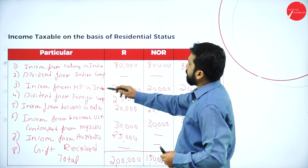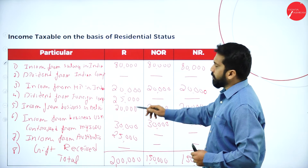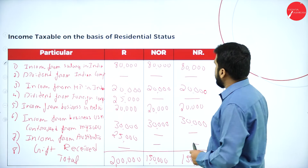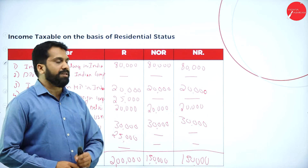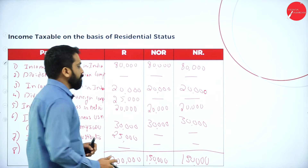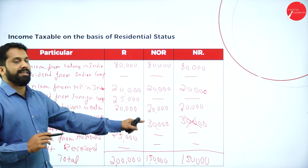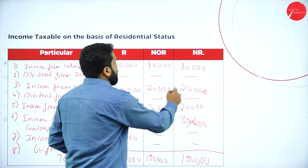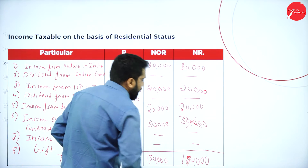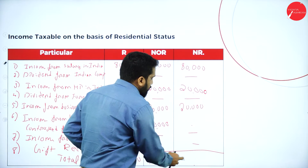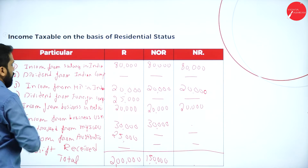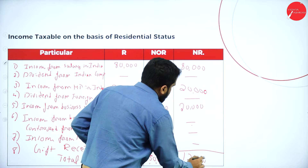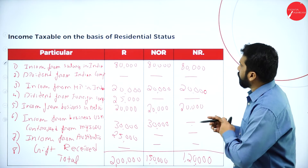Income from business USA controlled from Mysore — the 30,000 will not come for the last person (non-resident) because anything controlled in India is taxable for only two persons. So remove that entry. For the non-resident (person three): 80,000 + 20,000 + 20,000 = 1,20,000. The total for person three must be corrected to 1,20,000. Don't commit mistakes like this — anything controlled in India means only two persons are taxable.